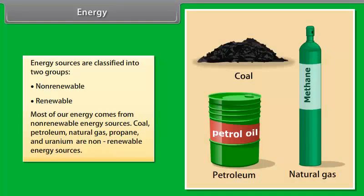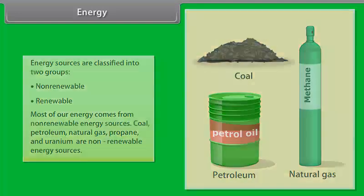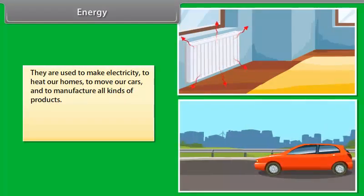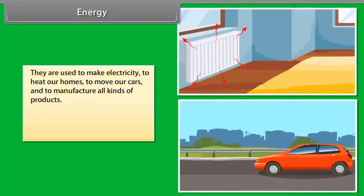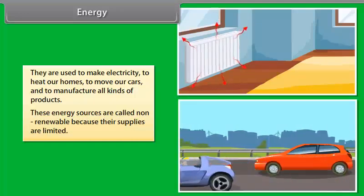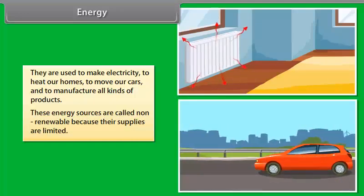Most of our energy comes from non-renewable energy sources. Coal, petroleum, natural gas, propane, and uranium are non-renewable energy sources. They are used to make electricity, to heat our homes, to move our cars, and to manufacture all kinds of products. These energy sources are called non-renewable because their supplies are limited.